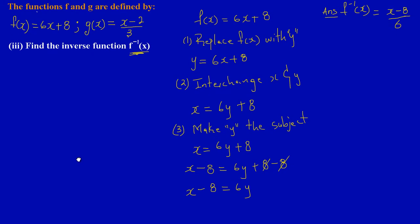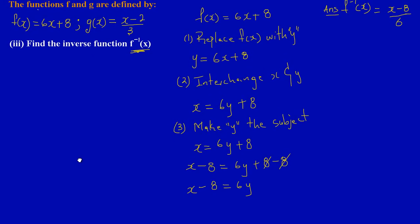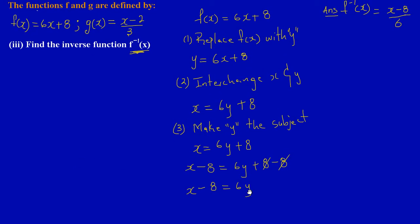x minus 8, and that is equal to 6y. Now if you look carefully, 6 is multiplying y, so to make y the subject we must divide through by 6. So I'm going to divide both sides by 6. So 6 there and a 6 there, so this 6 will cancel out with that 6.